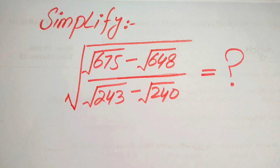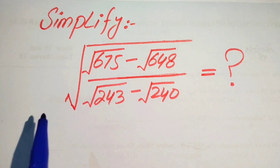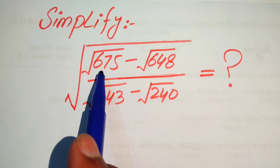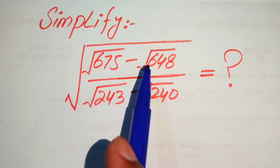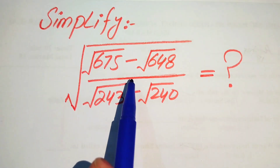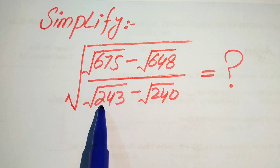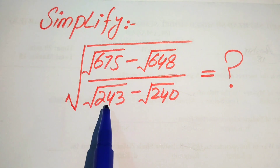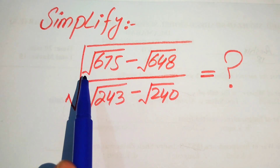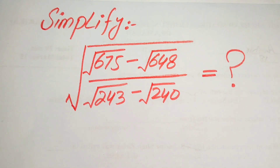Hello everyone. How to simplify this nice algebraic expression: square root of 675 minus square root of 648, divided by square root of 243 minus square root of 240, and its whole square root.